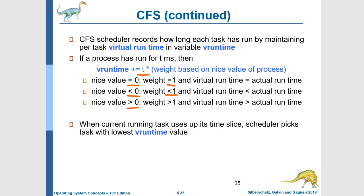On the other hand, if the nice value is greater than 0, then the weight is greater than 1. So we multiply actual run time by a value greater than 1, which means virtual run time will be greater than the actual run time. In that case, the task will complete its 1/n time slice more quickly in virtual run time than in actual run time. Whenever a task uses up its time slice, the scheduler will always pick the task with the lowest virtual run time to execute next.